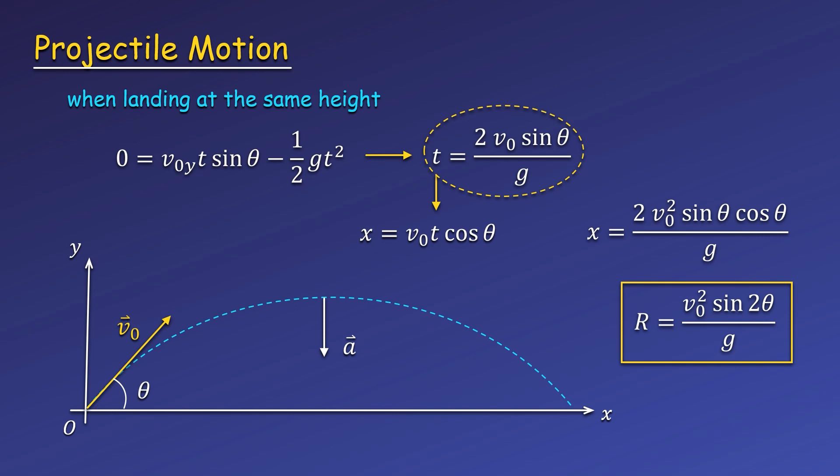Finally, if we think about how to achieve the maximum amount of range, obviously we could always increase the speed. But for a given speed, what would be the optimal angle to fire a projectile? The sine function will be maximum when the argument is 90 degrees, since it increases up to 90 degrees and then decreases beyond 90 degrees. In our equation, we will get sine of 90 when theta is equal to 45 degrees, so this is the angle when our range is maximum.